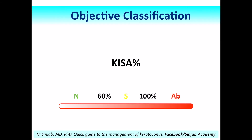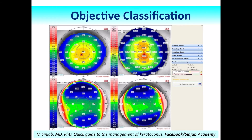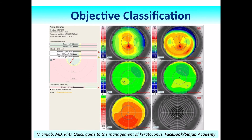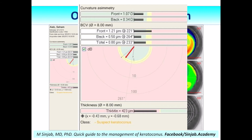The normal value of the KISA is less than 60%. It is suspected when between 60 and 100%, and diagnostic of keratoconus when more than 100%. Some machines, such as the SIRUS, have their own software to classify the case, and sometimes give a warning like 'suspect of keratoconus.' We double-click on the keratoconus summary and the keratoconus summary page will be displayed with some indices. I usually do not depend solely on the machine's classification — I prefer to study all findings together — but the machine's warning can give us an initial idea.